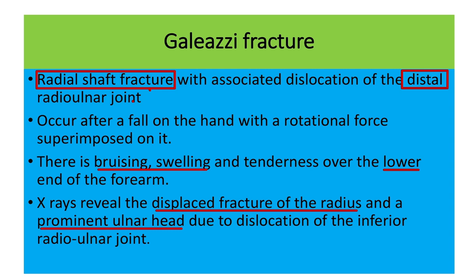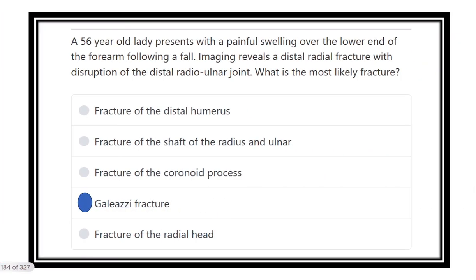The Galeazzi fracture occurs after a fall on the hand with a rotational force. Clinical features include bruising, swelling, and tenderness in the lower end of the forearm. On X-ray, there is a displaced fracture of the radius and a prominent ulnar head due to dislocation of the inferior radial joint.